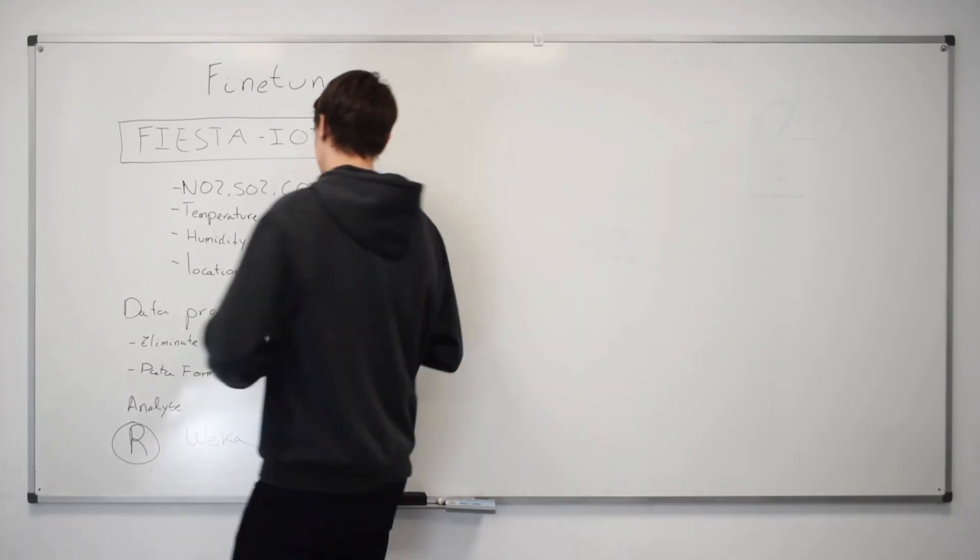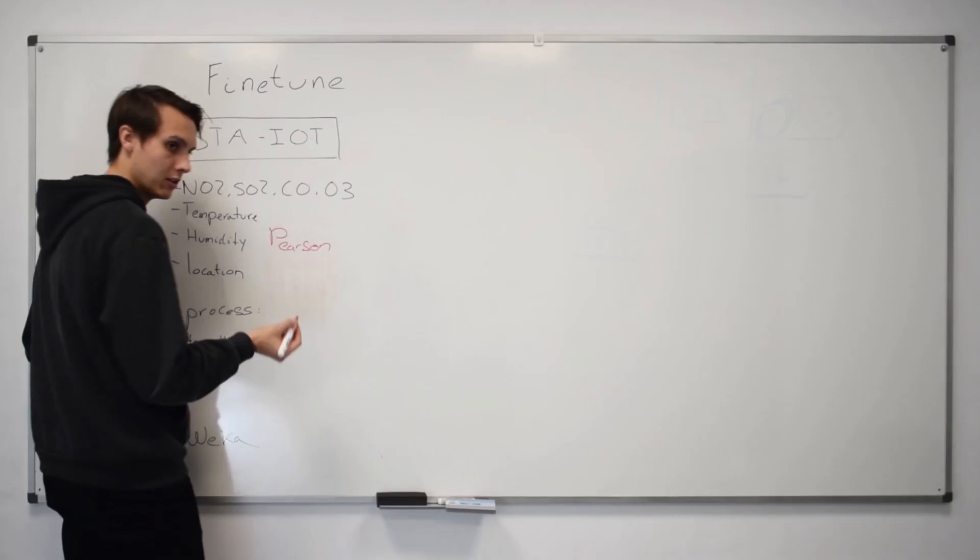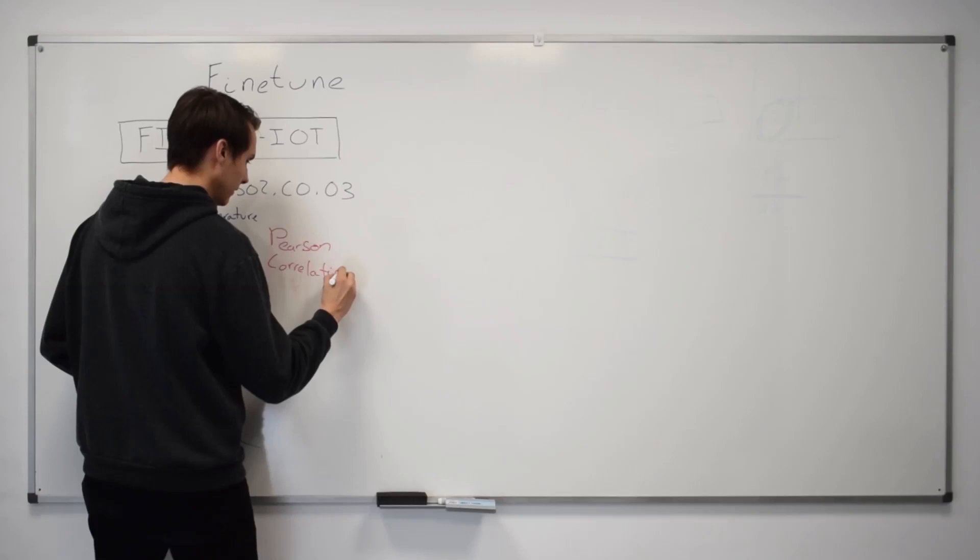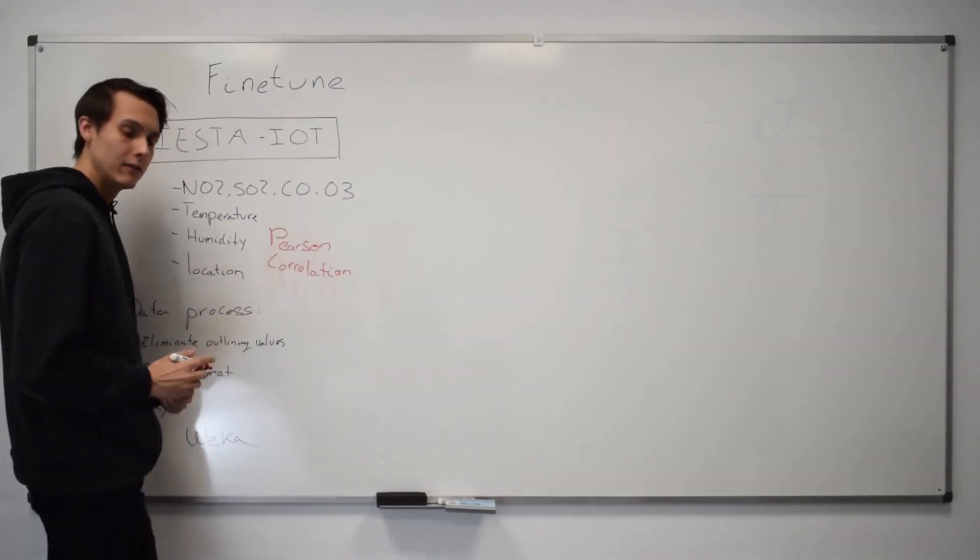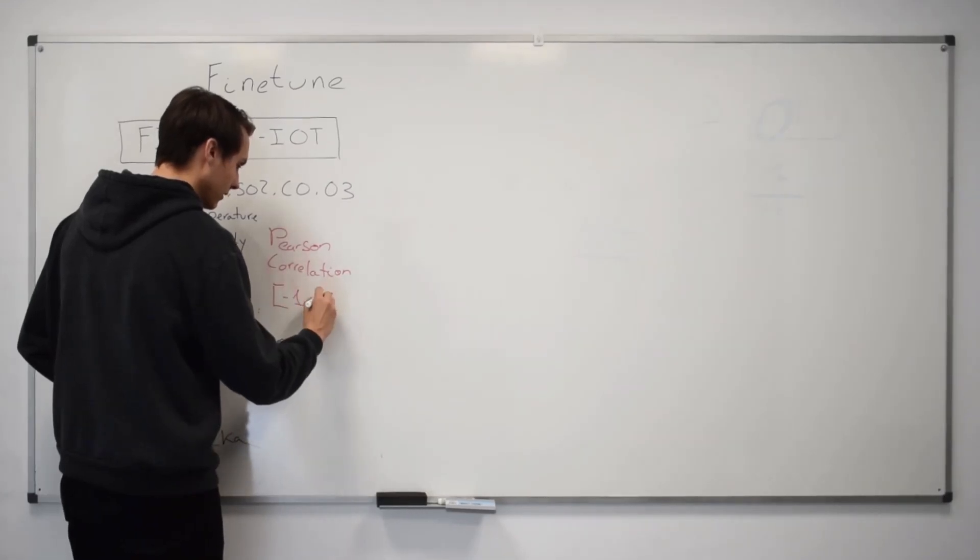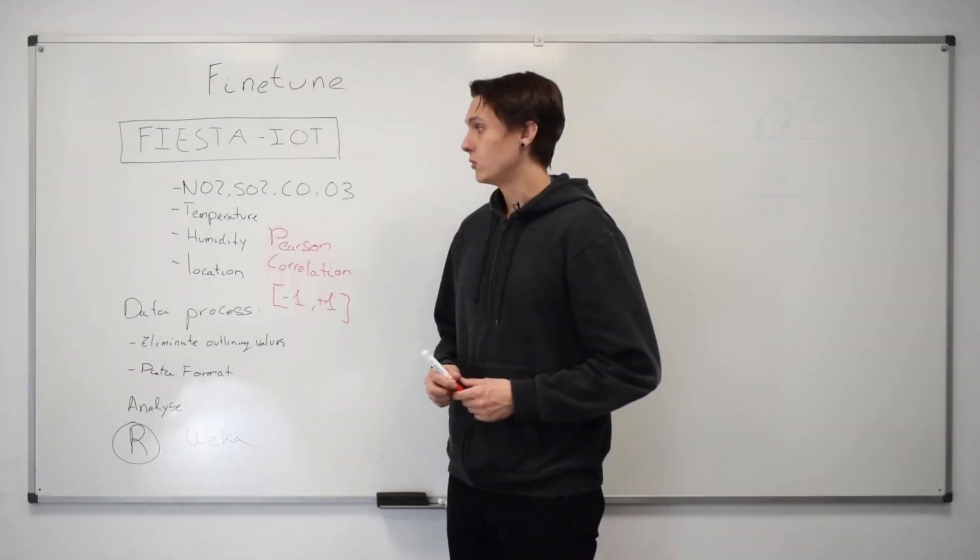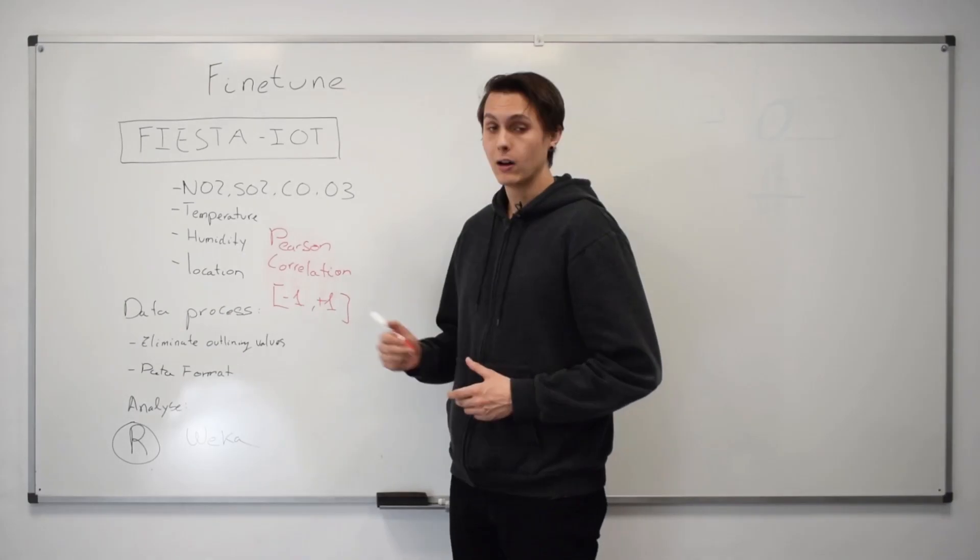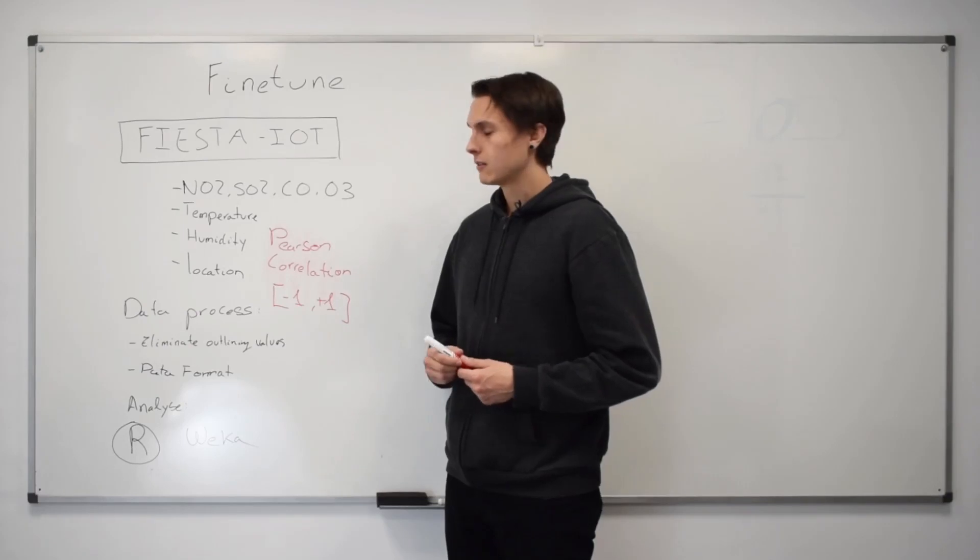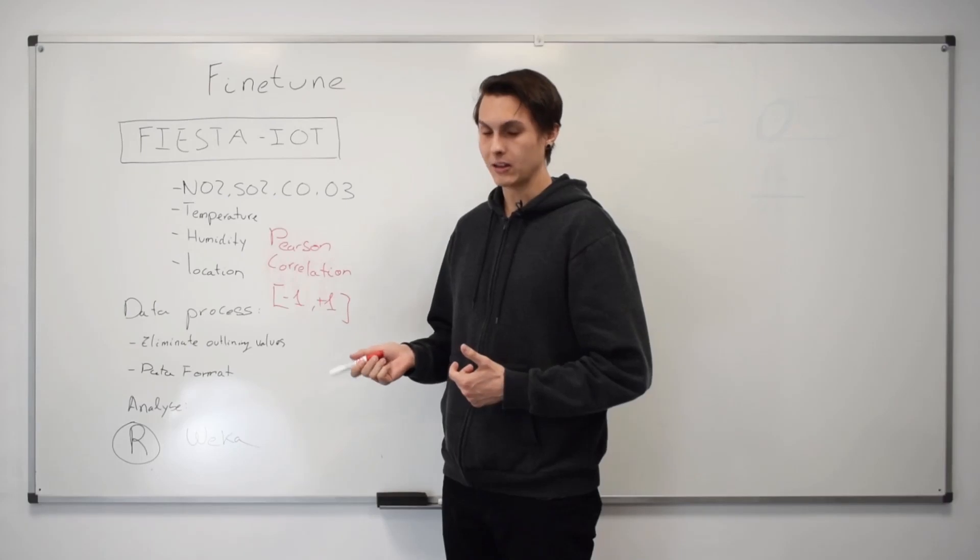That is a correlation measurement that comes from minus 1 to plus 1. If the result of the Pearson correlation index between two values is closer to plus 1, that means that the correlation is positive between them. That means again, that if one of the values rises, the other rises too.